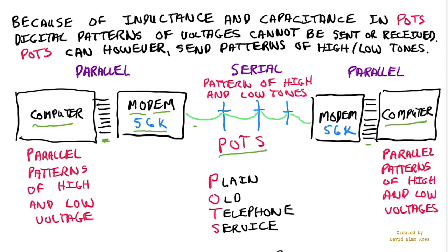Not only from parallel to serial, but the modem also had to convert the high and low voltages into high and low tones so the signal could be sent through the telephone service. That's what the modulator did — parallel to serial, then converting to high and low tones. The plain old telephone service is a very slow means to send information from one point to another, especially serially.